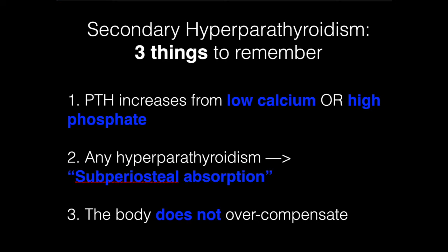So first off, three high-yield points. First, secondary hyperparathyroidism is defined as elevated PTH which is due to either low calcium or high phosphate. So it's not just hypocalcemia that can cause it — some people forget about high phosphate being another stimulus.